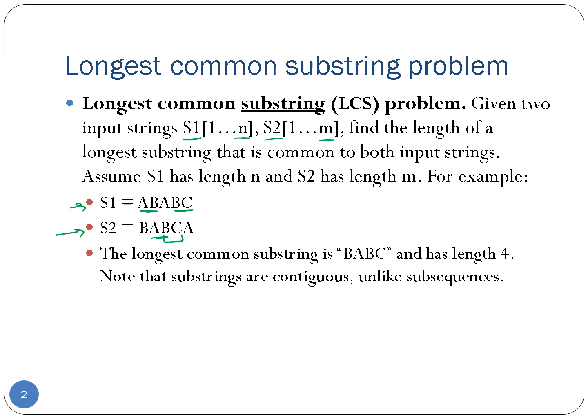However, the goal is to find the longest common substring, which in this case is the substring b, a, b, c. This substring is common to both s1 and s2 and it has the longest length. So the length of the longest common substring in this case is 4 and the substring is b, a, b, c.